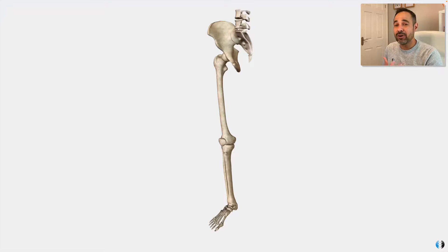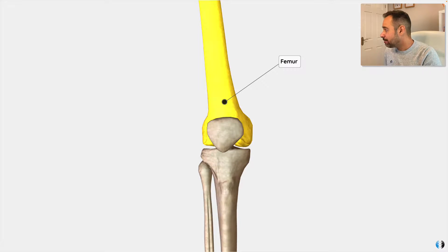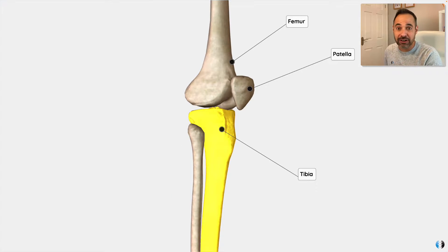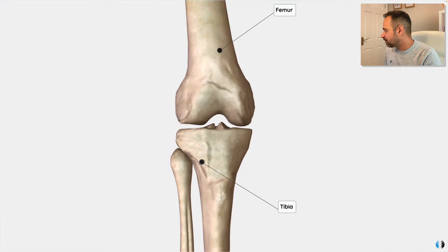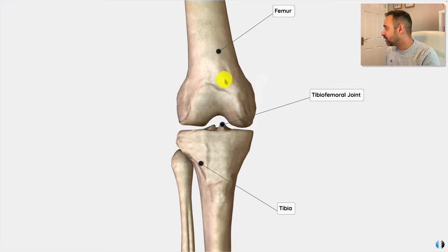To show you what knee osteoarthritis is all about, let's dive into our anatomy model. The knee joint is made up of the femur, also known as the thigh bone, the patella, or the kneecap, and the tibia, the big bone at the front of your shin. The main part of the knee joint is made up of what we call the tibiofemoral joint — the joint between the tibia and the femur.